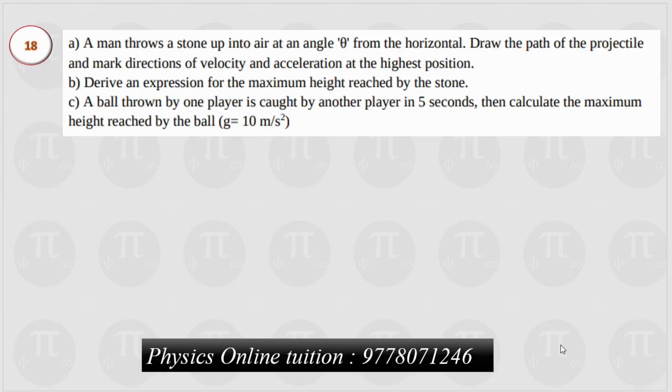Dear students, if you want to learn more about plus one improvement, we will learn more about projectile motion. A man throws a stone into air at an angle theta from the horizontal. Draw the path of the projectile and mark the directions of velocity and acceleration at the highest point. This is the first question.